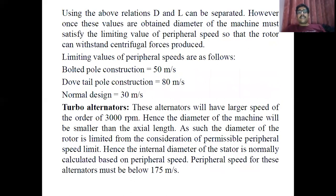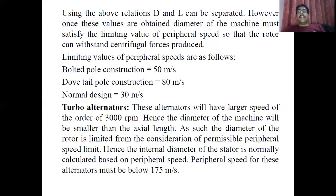Turbo alternators are alternators which have a large speed of the order of 3000 rpm, and these are basically used in generating stations to generate electrical power. The diameter of these machines is small compared to their length, and the diameter of the rotor is limited. In that case, the peripheral speed of the alternator must be below 175 m/s. So if a numerical asks you to design a turbo alternator, separate D and L using peripheral speed Va = π·D·ns ≤ 175 m/s.